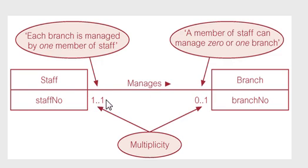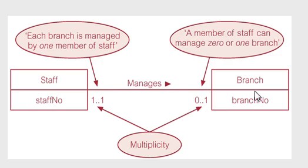This is an ER diagram in UML notation. In UML notation, this is how it looks. You can see the little numbers. Staff manages 0..1 branch, and that means a staff member can manage 0 or 1 branches.